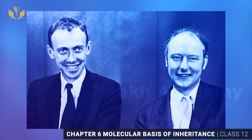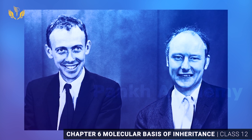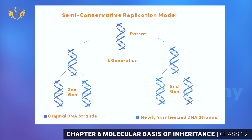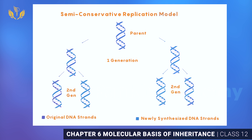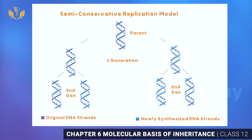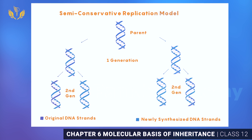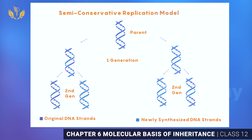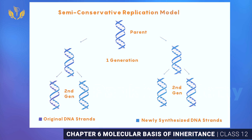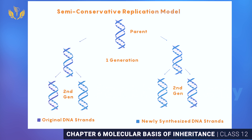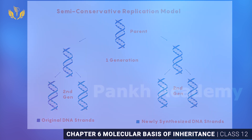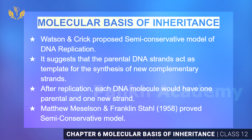First of all, let me tell you that Watson and Crick proposed a semi-conservative model of DNA. What did they say? When there is replication, one strand will always be a parental strand and the other strand will be a complementary strand. The semi-conservative method suggests that the parental strand will act as a template strand for the synthesis of a new complementary strand.